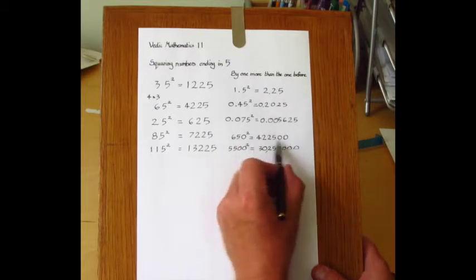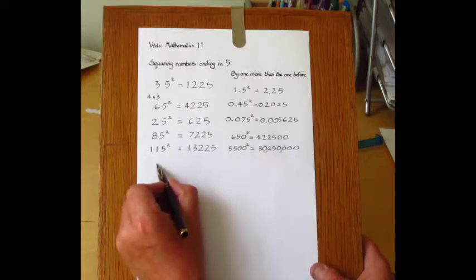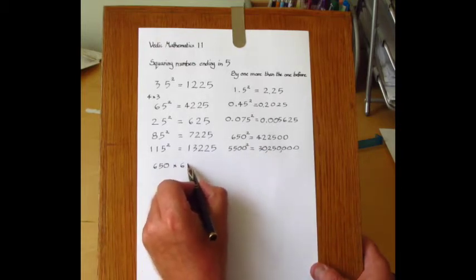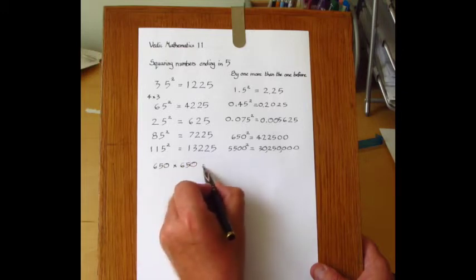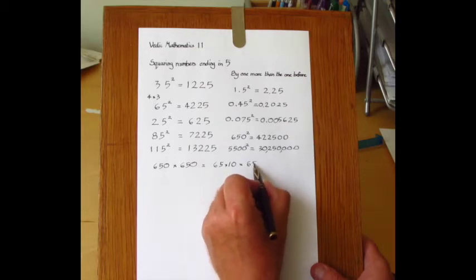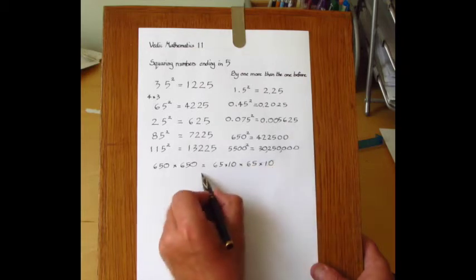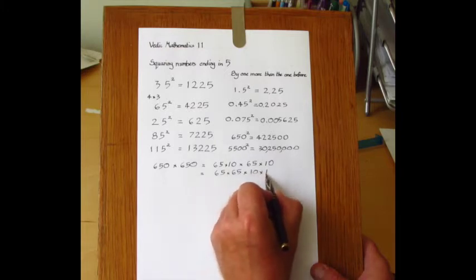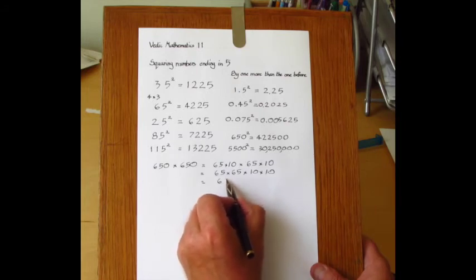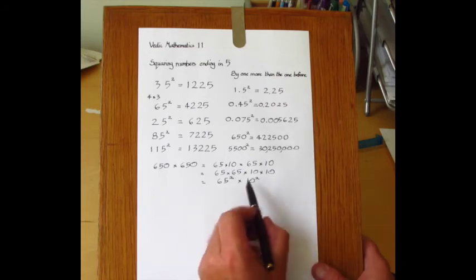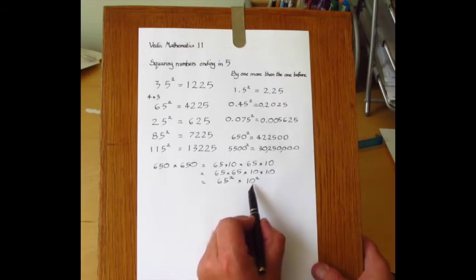Now why do we double the number of zeros? Well, if we take 650 squared, we can write it as 65 times 10 times 10, which equals 65 times 65 times 10 times 10. That's 65 squared times 10 squared, or 100. And that's why we double the number of zeros.